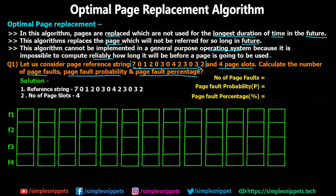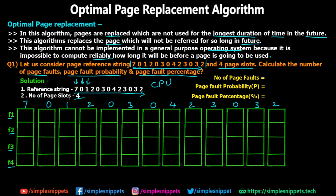The reference string represents the page numbers the CPU is wanting — page number seven first, page number zero second, page number one third, and so on. The reference string can also consist of alphabets or other symbols; it is simply the page number requested by the CPU. The number of page slots is four, so we have drawn four frames: frame one, frame two, frame three, and frame four in the main memory.